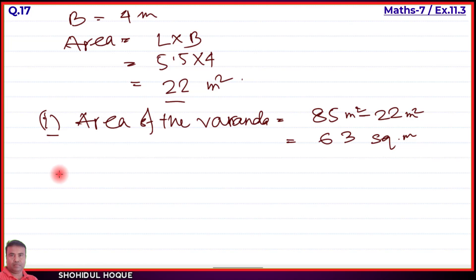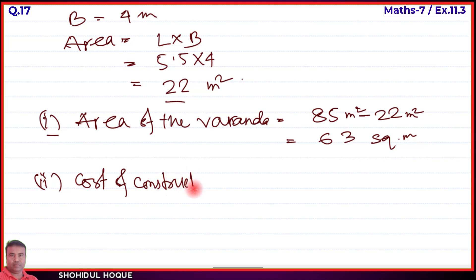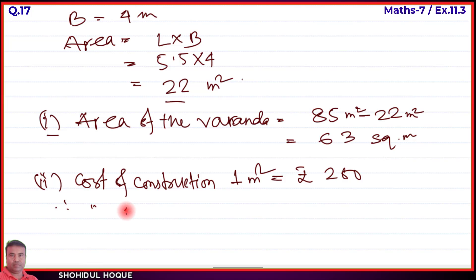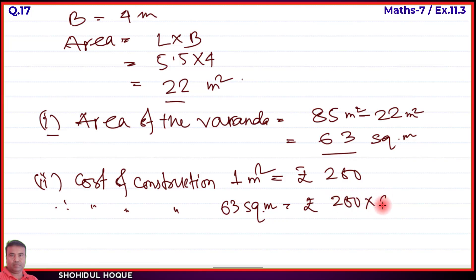Part 2 — cost of construction: cost per square meter = Rs. 200. Total area of baranda = 63 square meter. Therefore, total cost of construction = 200 × 63 = Rs. 12,600. Questions 15, 16, and 17 are now solved.